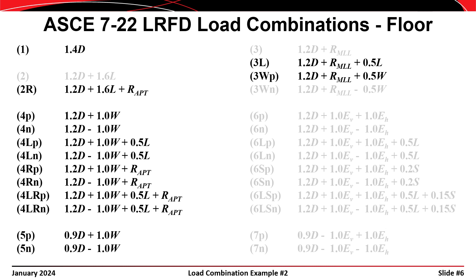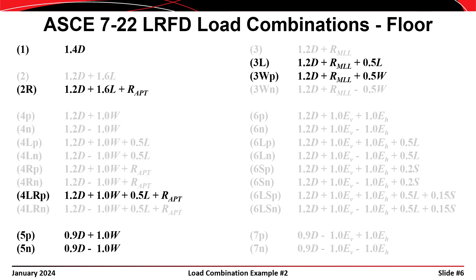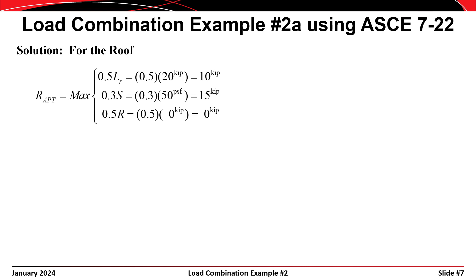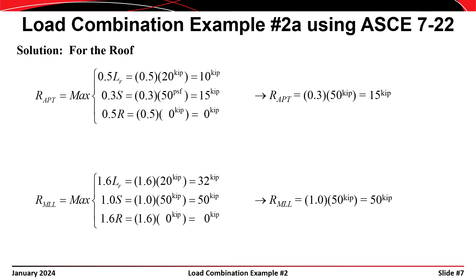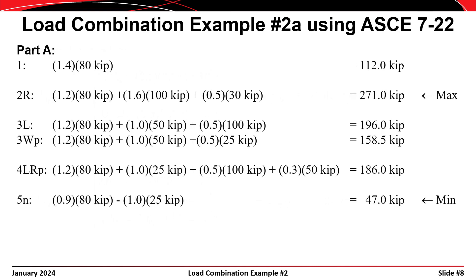Wind load is treated as a primary loading in load combinations 4 and 5. When the wind load causes compression and is additive to the dead load, permutation 4LRP will control. When the wind load causes tension, acting opposite to the dead load, permutation 5N will control. The snow load governs for the roof loading: the arbitrary point in time roof loading is 0.3 × 50 kips = 15 kips, and the maximum lifetime roof loading is 50 kips. Substituting values into the load combinations, the maximum force effect comes from load combination 2 and the minimum from load combination 5.